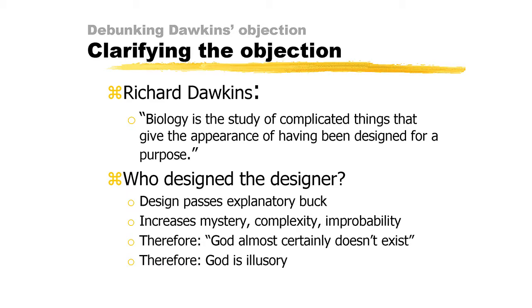In fact, Dawkins thinks that his argument renders God extremely improbable. So, Dawkins concludes, God almost certainly doesn't exist.